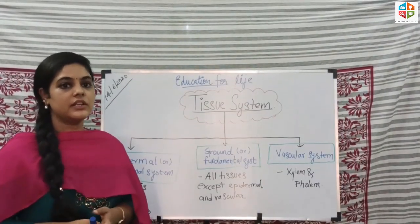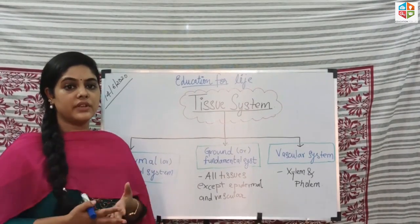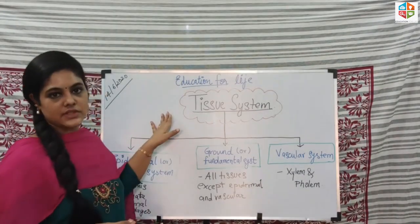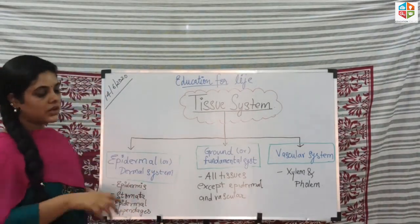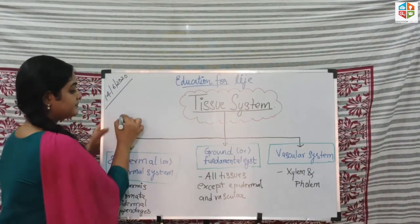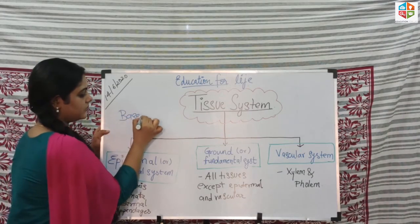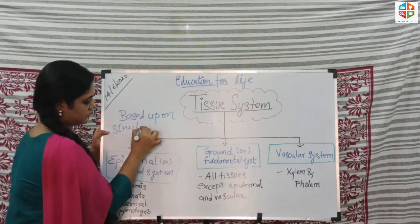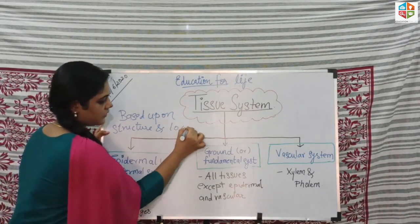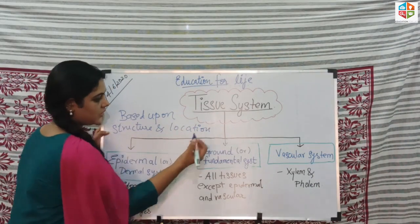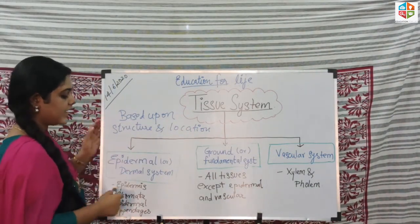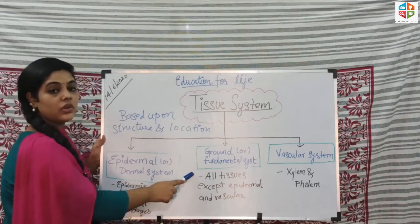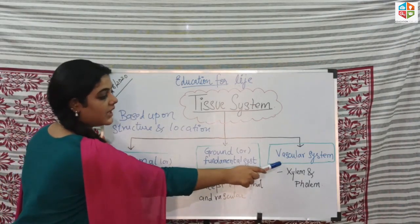So what is a tissue system? A tissue system is a group of different tissues put together performing the same function. Tissue systems are classified based upon their structure and location. There are three types: the first is the epidermal or dermal system, the second is the ground or fundamental system, and the third is the vascular system.